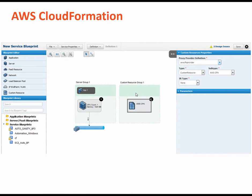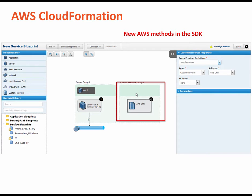The Amazon Web Services SDK provides a new set of methods for API access to the BMC Cloud Lifecycle Management stack and the AWS Cloud. The Amazon Web Services SDK allows users to leverage all BMC CLM capabilities, like managing services and servers in a heterogeneous environment. This feature is available as a field kit on the BMC Cloud Lifecycle Management community.